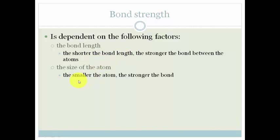So obviously the bigger the atom, the longer the bond length, and the smaller the atom, the shorter the bond length. So the smaller the atom, the stronger the bond.